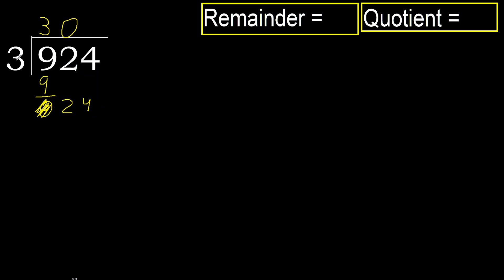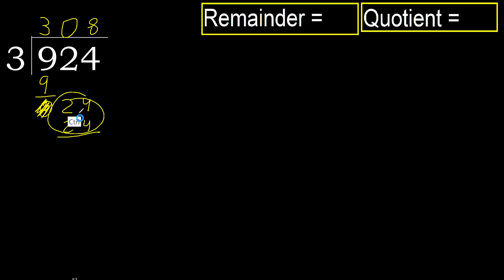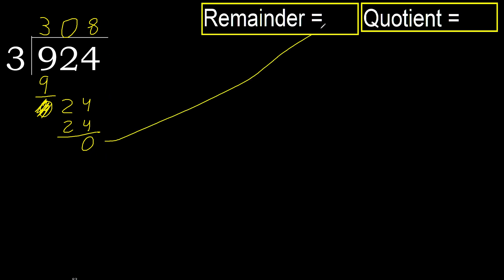24. 3 multiplied by 8 is 24 — not greater. Subtract. There is no next number, therefore finish.